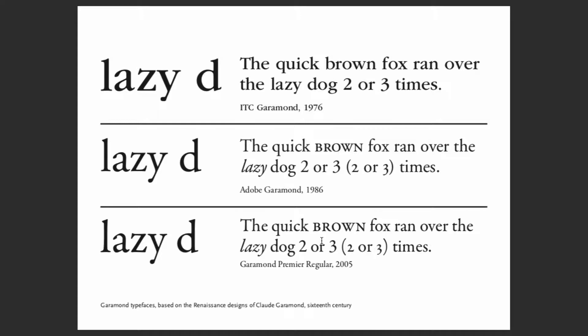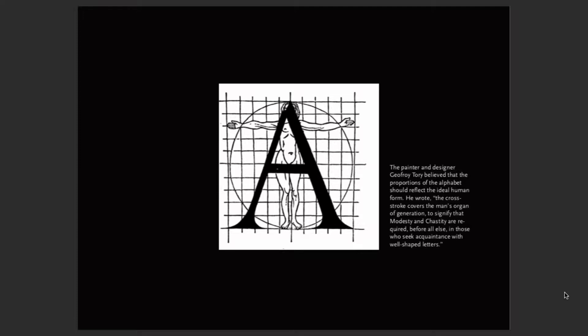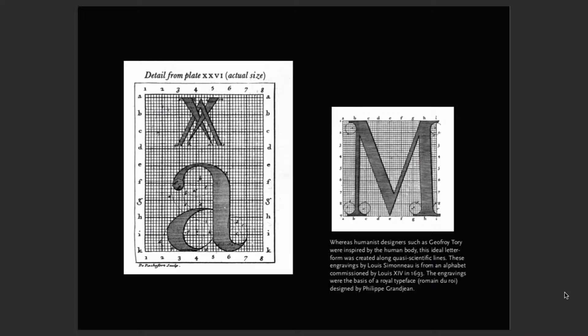Enlightenment and abstraction: the painter and designer Geoffrey Tory believed that the proportions of the alphabet should reflect the ideal human form — the Renaissance obsession with perfection and the human form's relationship to the world. Here is the ideal letter form created by France's scientific committee for Louis XIV in 1693. A lot of these are usually considered the Romain du Roi — the typeface of the king — and Louis XIV was obsessed with proportion and perfection.